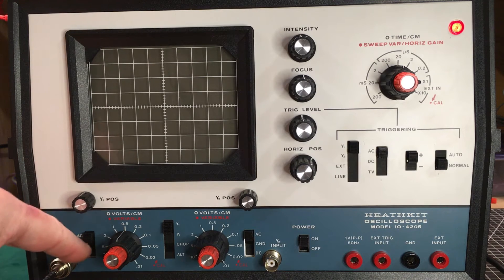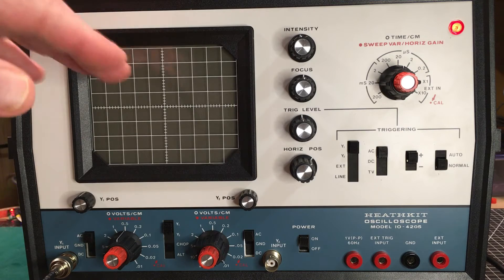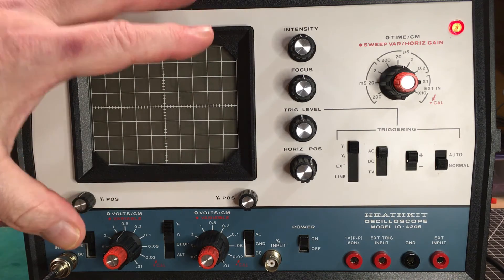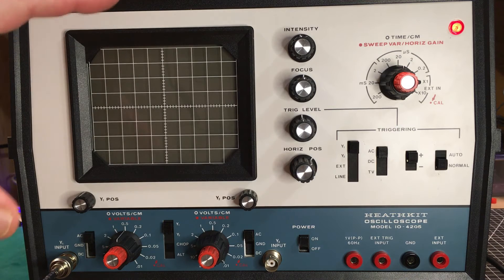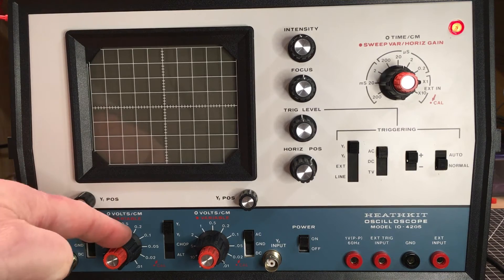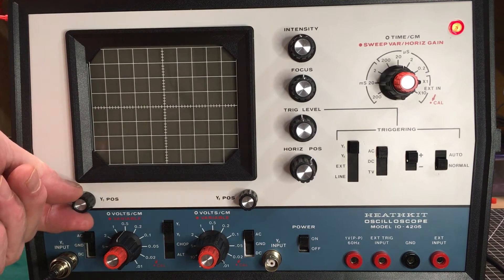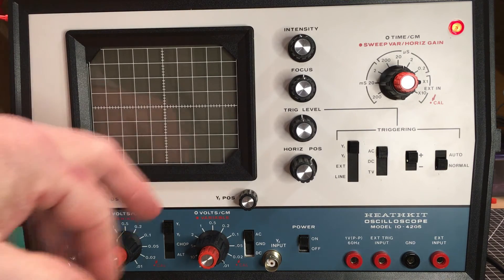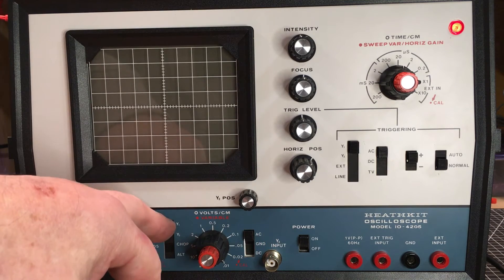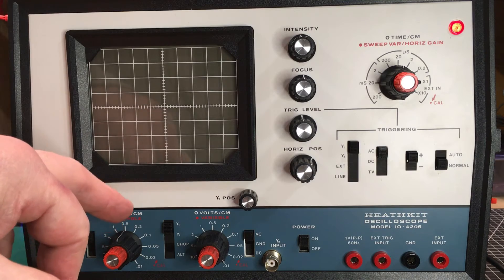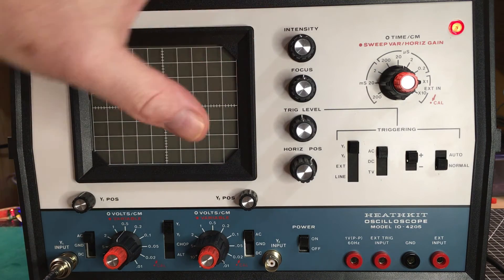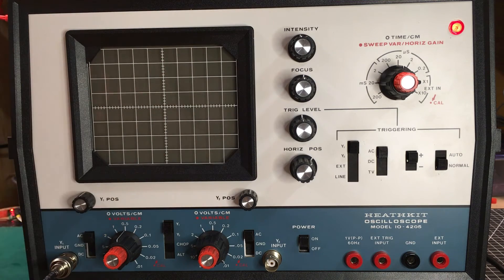We'll start off here in AC. The reason I do that is because if there is some DC component that has the signal way off the screen somewhere, it'll not allow me to see it and I'll have problems trying to find the signal. So always start off in AC, put this in the middle, put your position control in the middle, and we'll ignore this channel there. We're just going to work on channel one here. Don't worry about the intensity and focus, they've already been set up from the last time I used the scope.